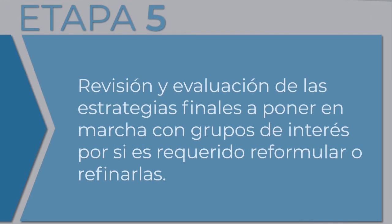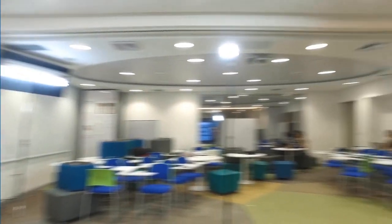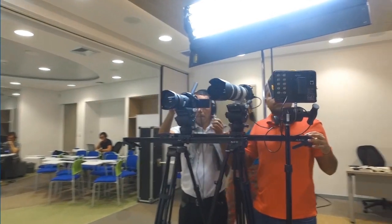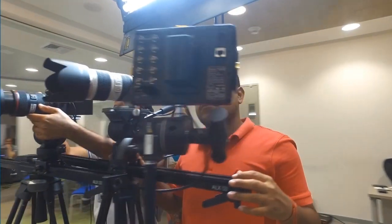En esta etapa lo que vamos a hacer es la planeación estratégica: es revisar con nuestros grupos de interés si esas estrategias que planteamos realmente son importantes e interesantes para ellos, y si es necesario, recabar y convertirlas nuevamente. Con esto ya tienes una panorámica general de lo que es el DOFA, y con la etapa 5 damos por terminado este módulo. Lo que nos queda son los otros módulos en las herramientas de aplicación. Muchas gracias y nos vemos en el próximo módulo.